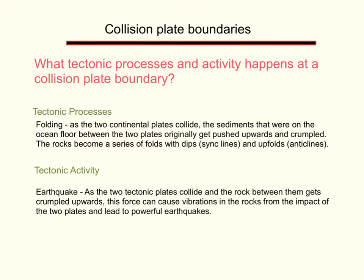The next thing to consider is what tectonic processes and activity happen at a collision plate boundary. Tectonic processes are actions, and at a collision plate boundary the tectonic process or action is folding. This occurs when the two continental plates collide. The sediments that were on the ocean floor between the two plates get pushed upwards and crumpled. The rocks then become a series of folds — down-folds that we call synclines and up-folds that we call anticlines.